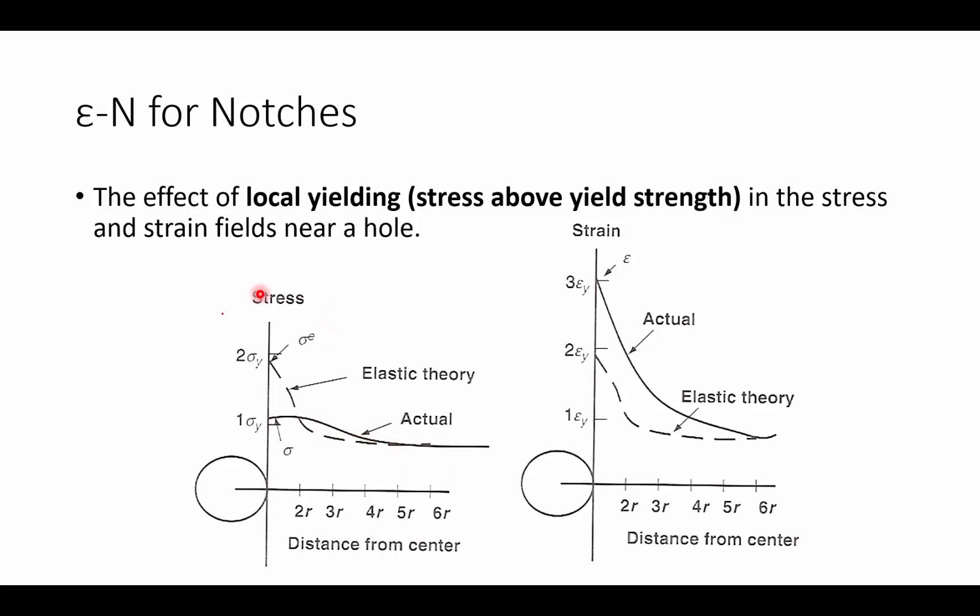We can see here in the stress plot that elastic theory projects a very high value of stress with respect to the remote loading value, where sigma is the remote loading. While in actuality, because we've reached the yield strength of the material, the actual stress field is much lower and much more moderate. What that means is that local yielding at a notch reduces the stress concentration factor in the vicinity of that notch.